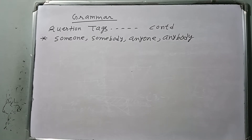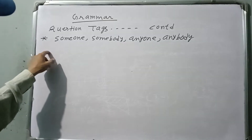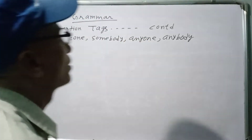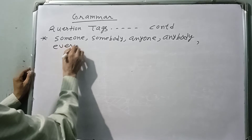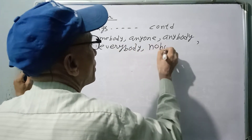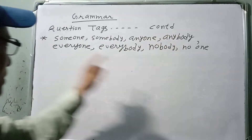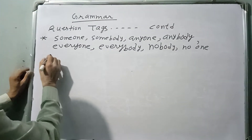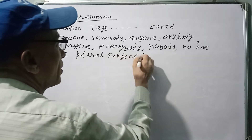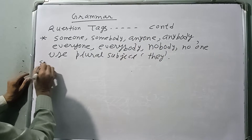Good morning, class 8, 9, and 10. Question tags continue. Yesterday one rule was left. The rule is that when we have someone, somebody, anyone, anybody, everyone, everybody, nobody, or no one, we use a plural subject like 'they' and use the verb according to the subject.